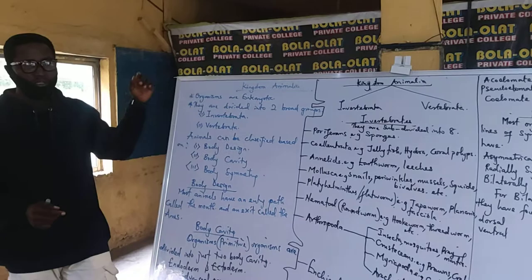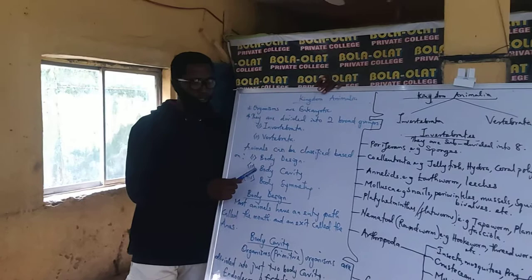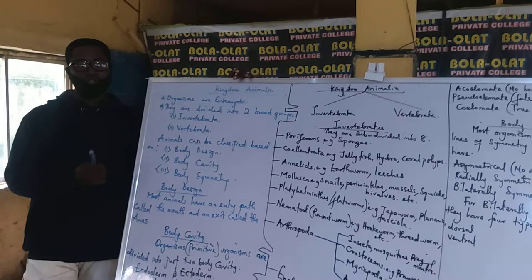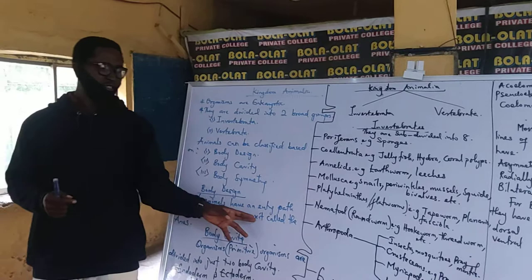In classifying all animals, we can easily say that their body design, their body cavity, and their body symmetry can be used to classify all animals. Their body design — most animals have an entry path called the mouth and an exit called the anus.